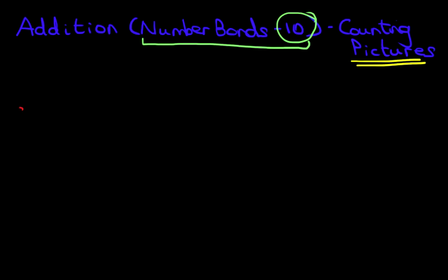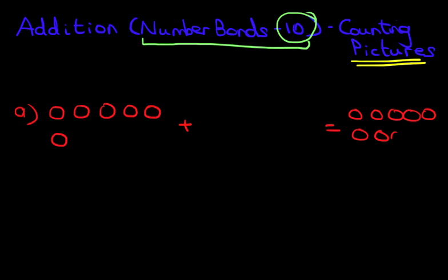Let's have a look at our first example. I'm going to draw, okay, that is our question. We've got red circles on the left, we've got a plus sign, and we've got red circles on the right after the equal sign.